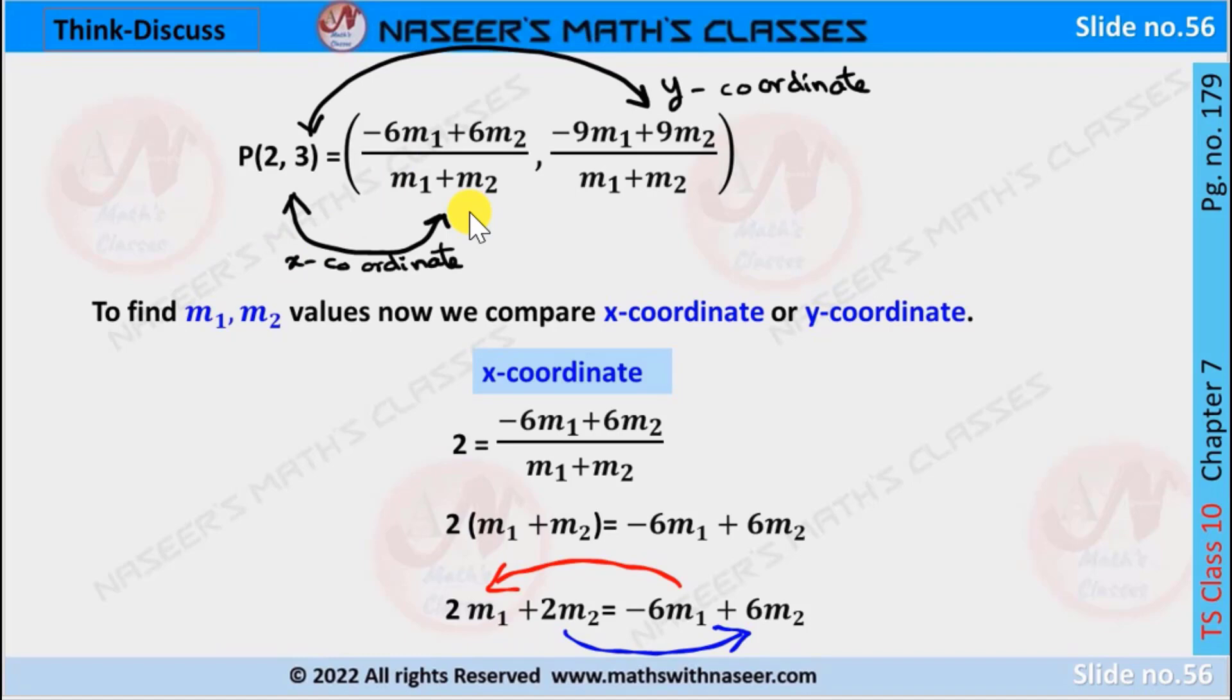Now we compare the x coordinates, then we can write it as 2 equals -6m1 + 6m2 by m1 + m2. Now we transpose m1 + m2 from denominator to LHS, then we can write it as 2(m1 + m2) equals -6m1 + 6m2. Now using distributive law we can write it as 2m1 + 2m2.